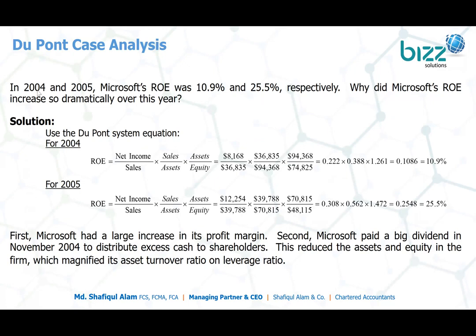Now let's look at an interesting example. One company — Microsoft — in 2004 had an ROE of 10.9%, almost 11%, and in 2005 it was 25.5%. Why did Microsoft's ROE increase so dramatically? Using the DuPont analysis system, ROE equals net income divided by sales, multiplied by sales divided by assets, multiplied by assets divided by equity. Let's look at Microsoft's financial statements to find the figures.